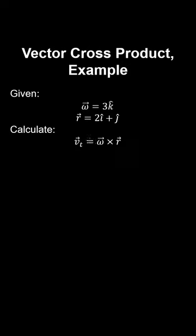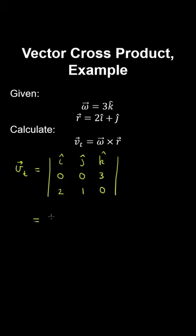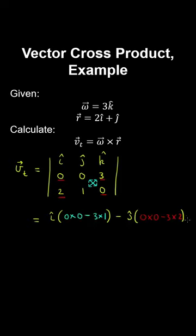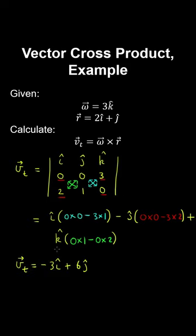Given vectors omega and R, let's calculate their cross product using the determinant method: unit vectors in the first row, components of each vector in the following rows. We calculate each unit vector multiplied by the determinant of the minor matrices, giving the following result. This is the tangent vector resulting from the cross product of the angular velocity with the radial vector in circular motion. As an exercise, verify it is perpendicular to both vectors by taking its dot product with each, which should be zero.